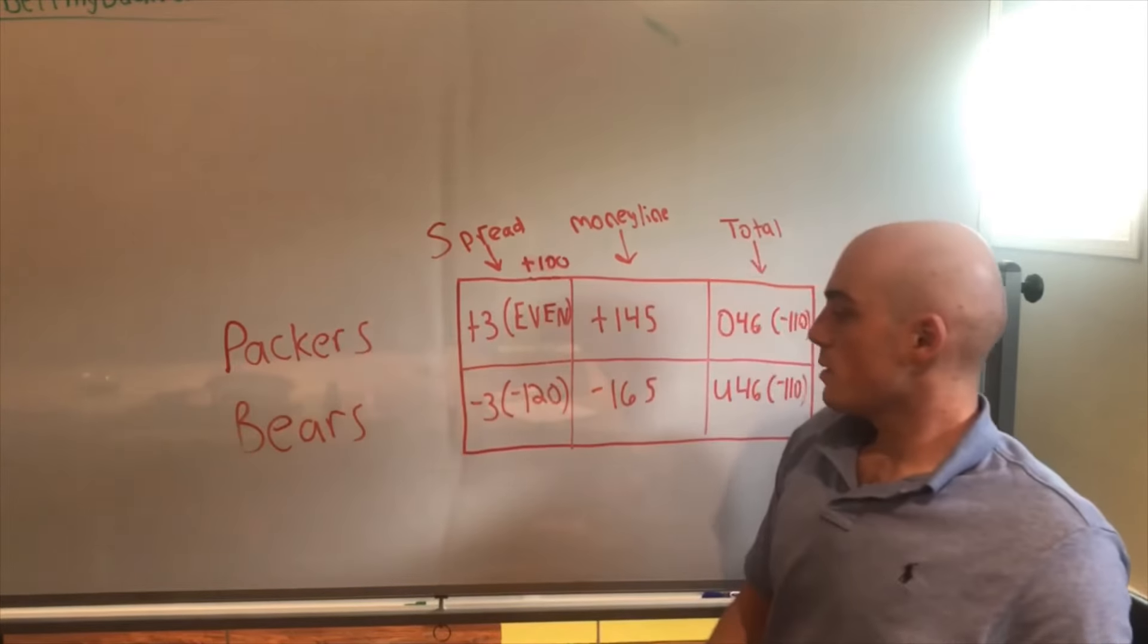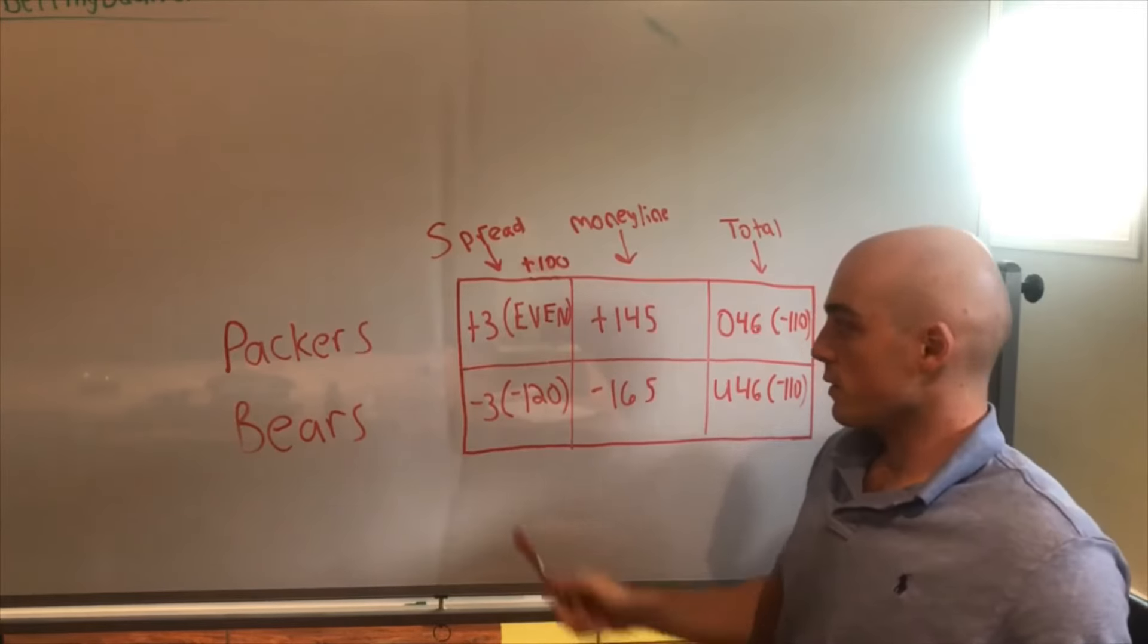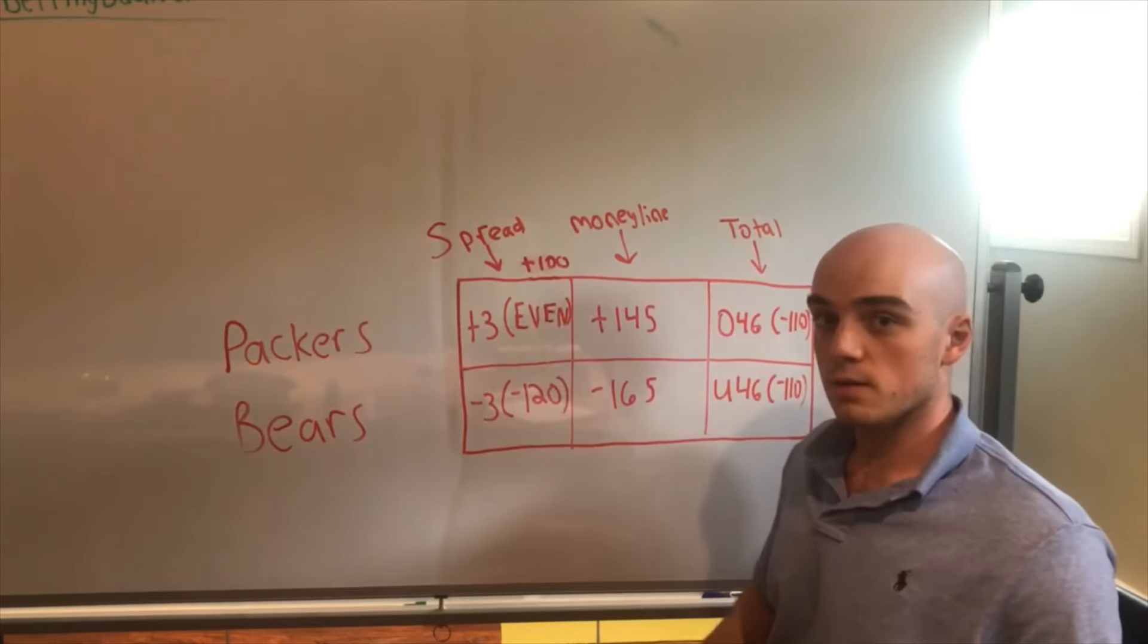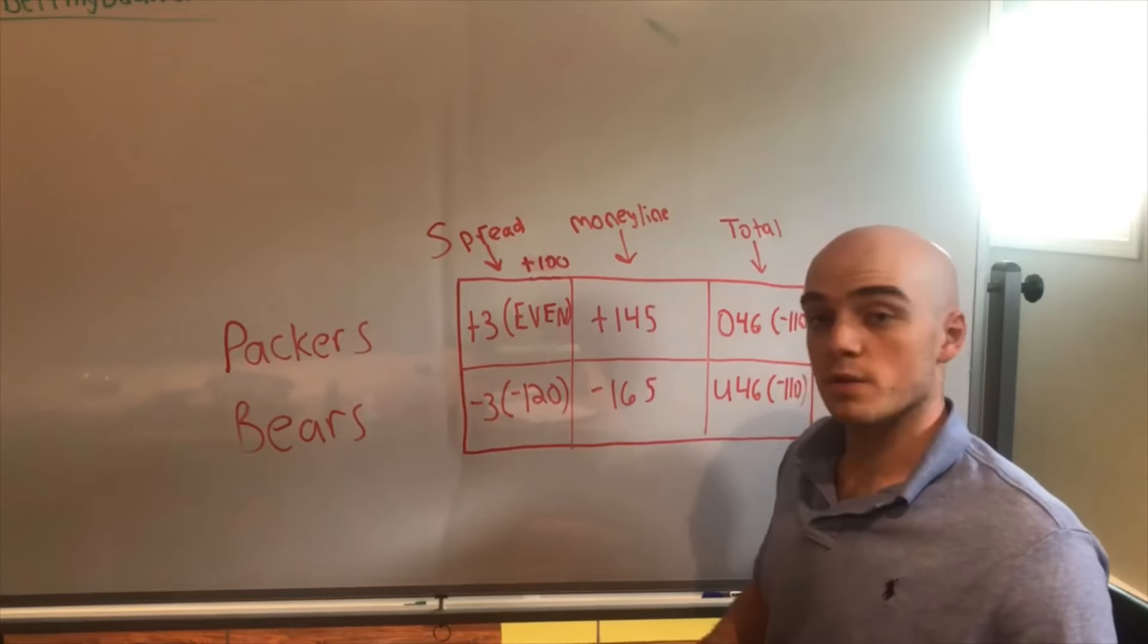And that minus 20 is essentially how the sportsbook makes the money. If you have an equal number of bets on both sides, they end up covering themselves there.